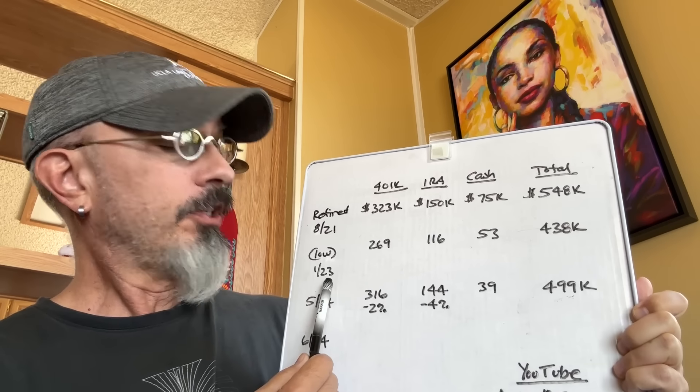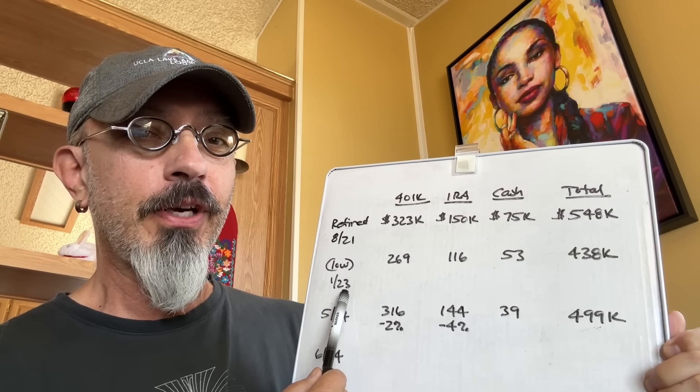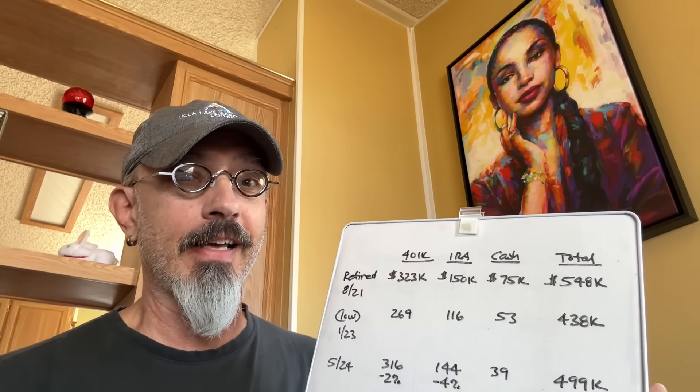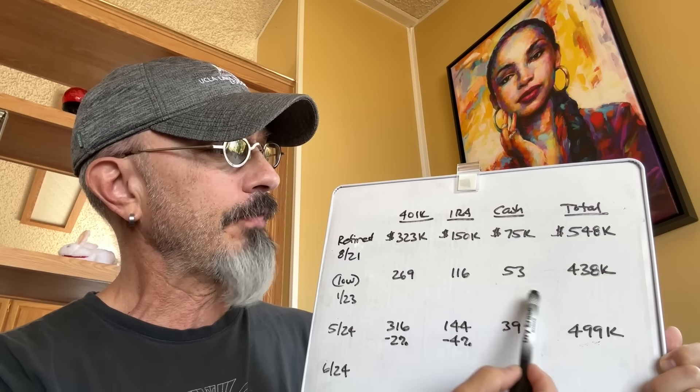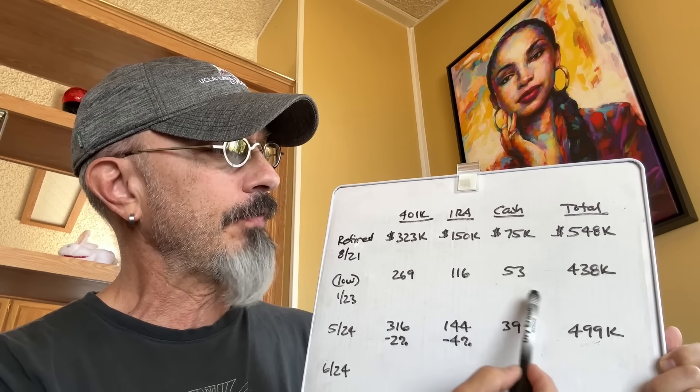My worst month, January of 2023. Oh, my God. You know what I was hearing then? Storm clouds, baby. Storm clouds. And that stayed like that for a while. That was my worst month. Look at the difference there. $269,000, $323,000, $116,000, $150,000, $53,000, $75,000, $438,000. You know what? I forgot to write down how much I was down then. Here it was negative 17% from when I retired. Here it was all the way down to a negative 22% in that IRA from when I retired. Look at that difference, $110,000 in about a year, a little less than a year and a half. That was a scary time. Very scary.